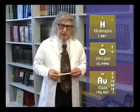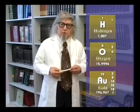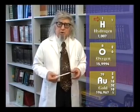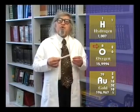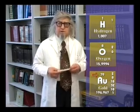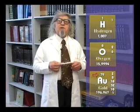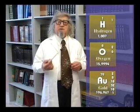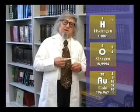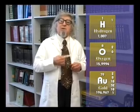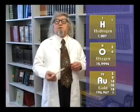For example, there is one proton in the hydrogen atom, the lightest element, 8 in oxygen and 79 in gold. It is only this difference in the number of protons that makes gold different from iron and iron different from oxygen.